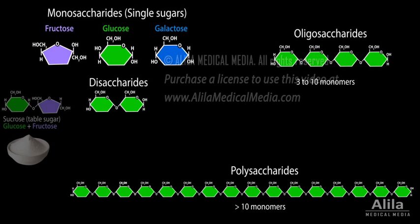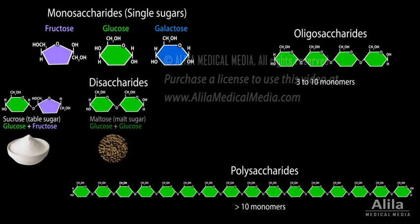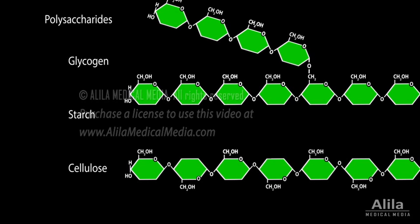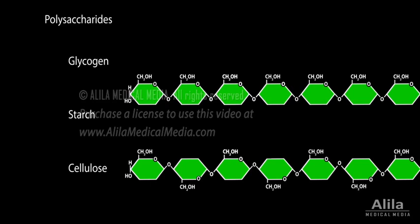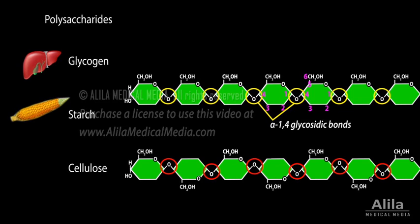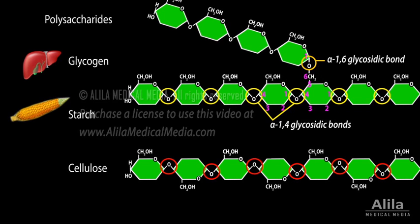Examples of disaccharides are sucrose, maltose, and lactose. Common polysaccharides include glycogen, starch, and cellulose, all of which are polymers of glucose. Their differences arise from the bonds between monomers. Glycogen and starch serve as energy storage in animals and plants, respectively. Their monomers are bonded by alpha linkages. Some monomers can make more than one connection, producing branches.